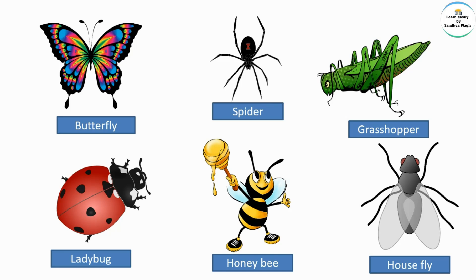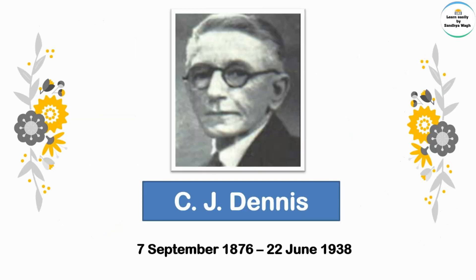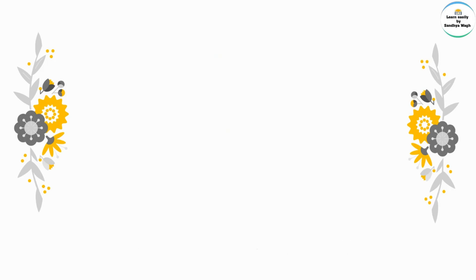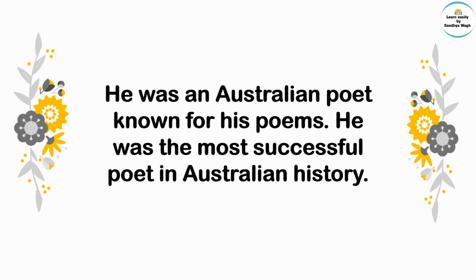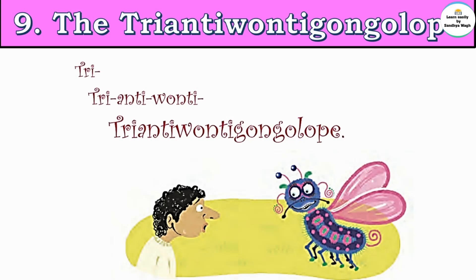This is a picture of C.J. Dennis. His actual name was Clarence Michael James Dennis. He was born on 7th of September 1876 and he died on 22nd June 1938. He was an Australian poet known for his poems and was the most successful poet in Australian history. Now let's understand the poem 'The Triantiwontigongolope'.